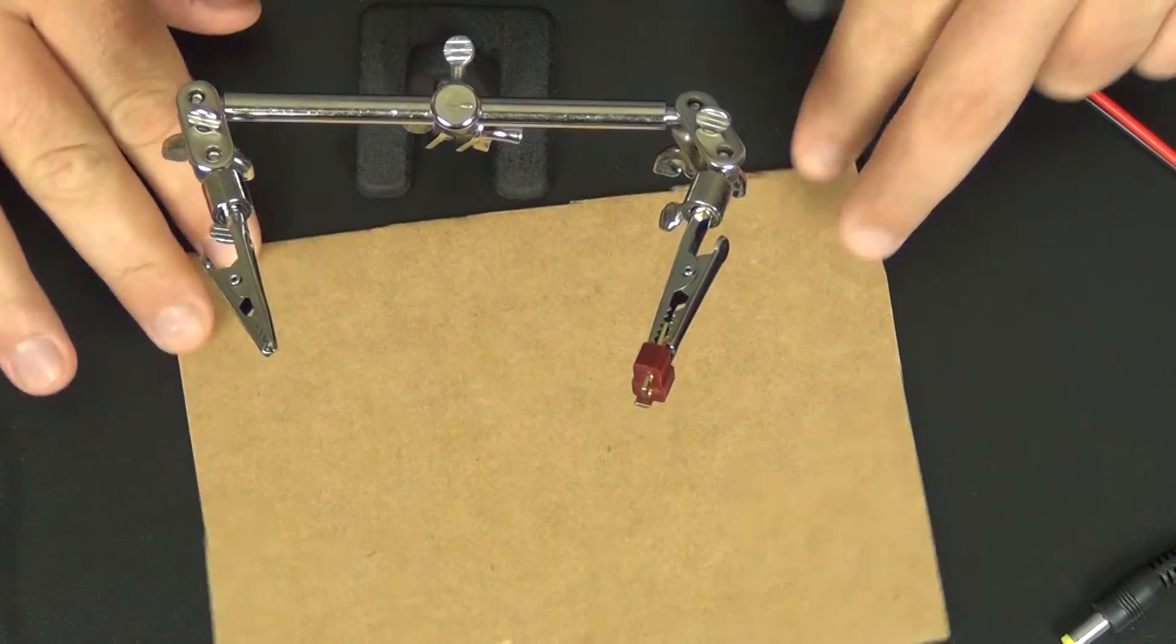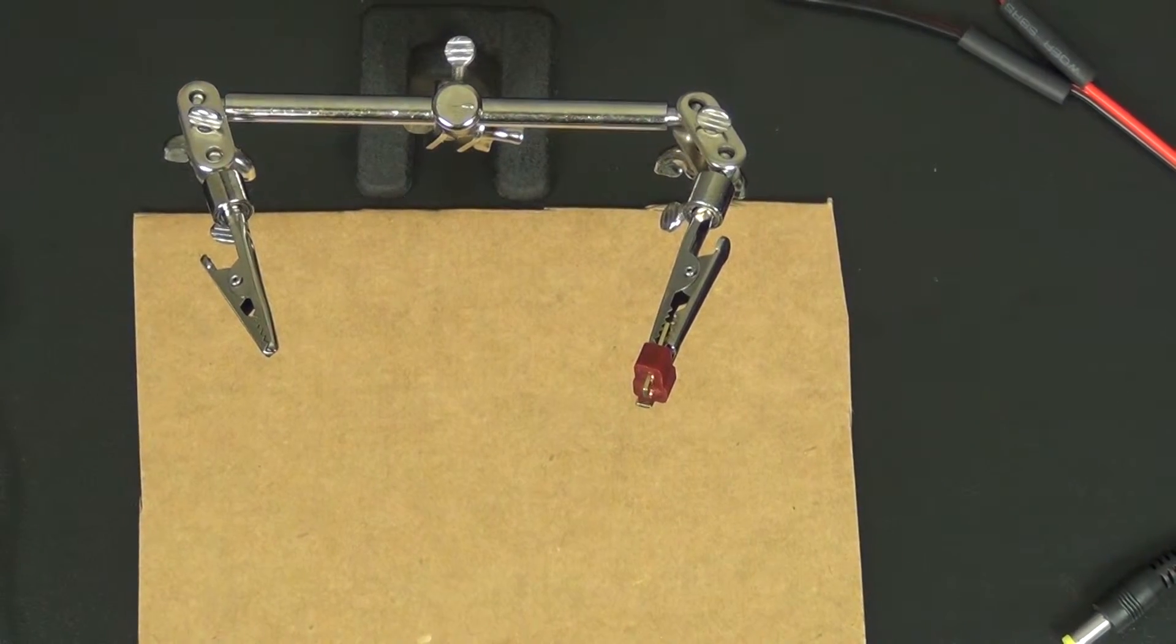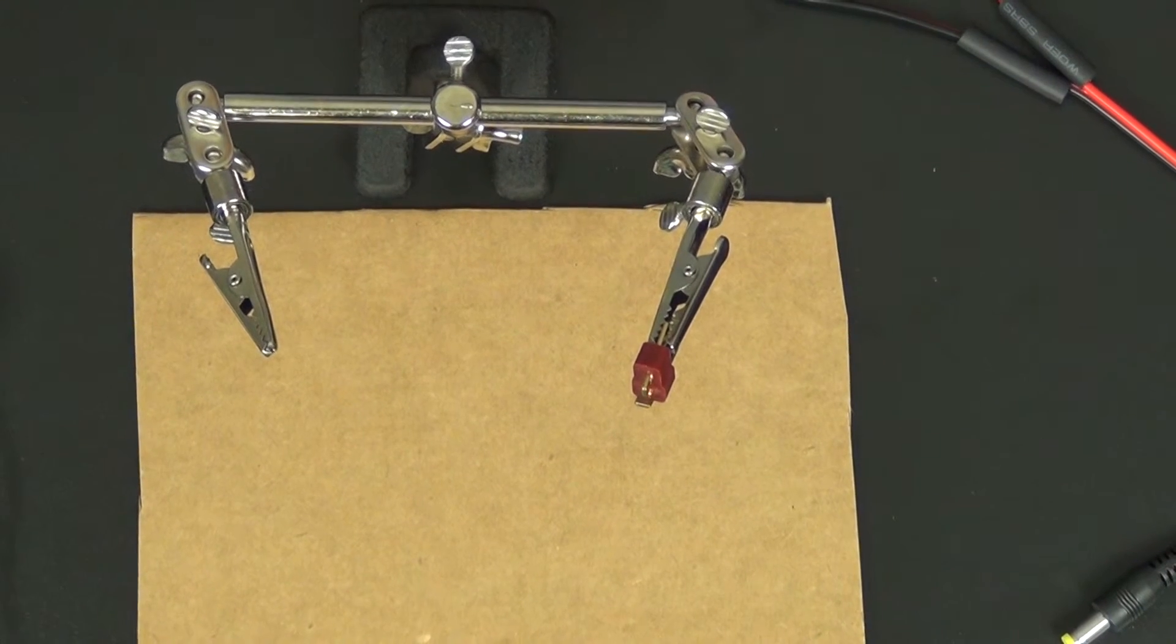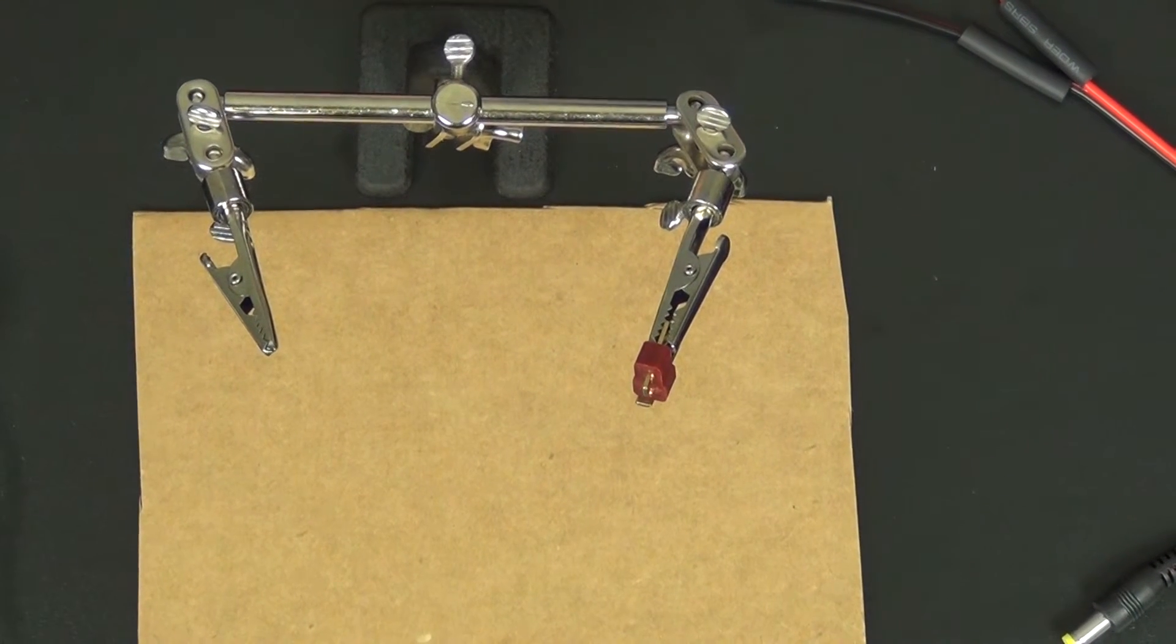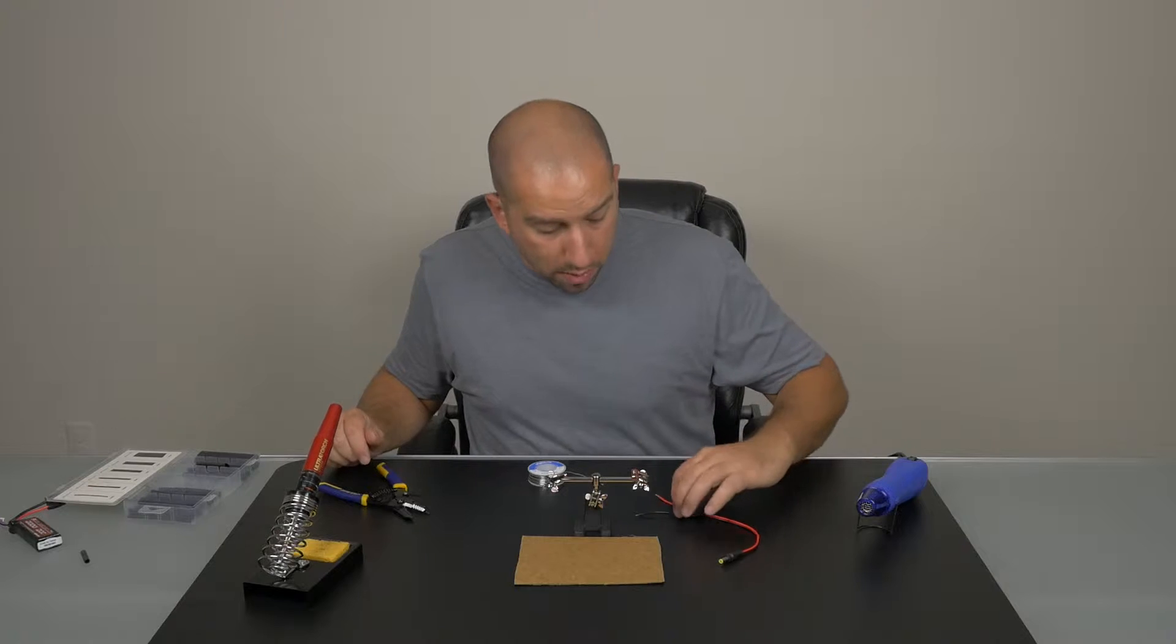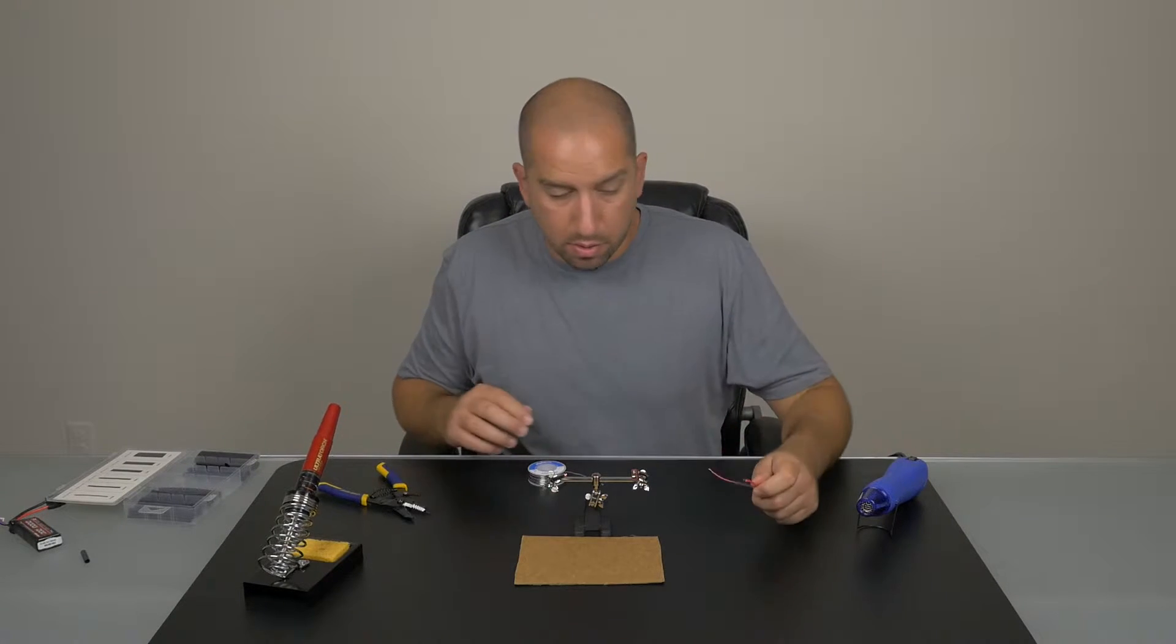Alright, so putting a little piece of cardboard right underneath in case we drop some solder. We don't want that to melt our pad here on the table. So the first wire we're going to do is the hot lead, so we're going to do the red wire first.